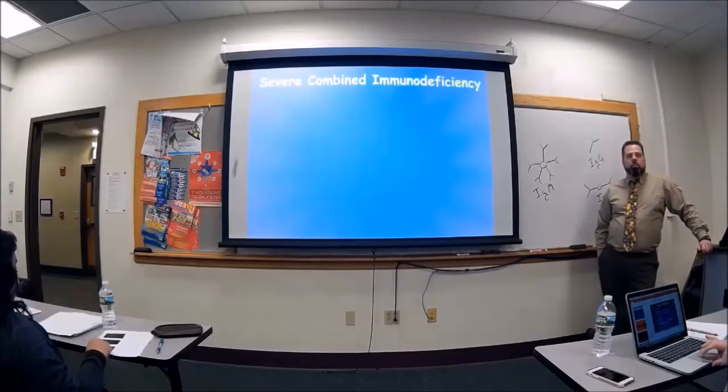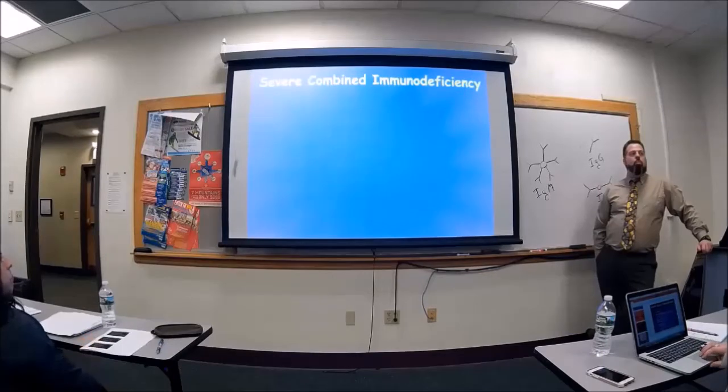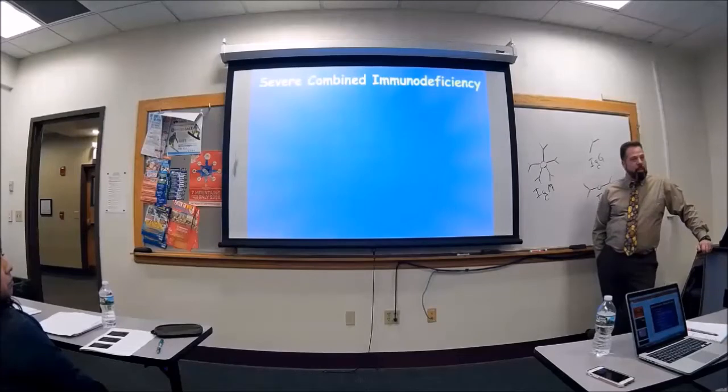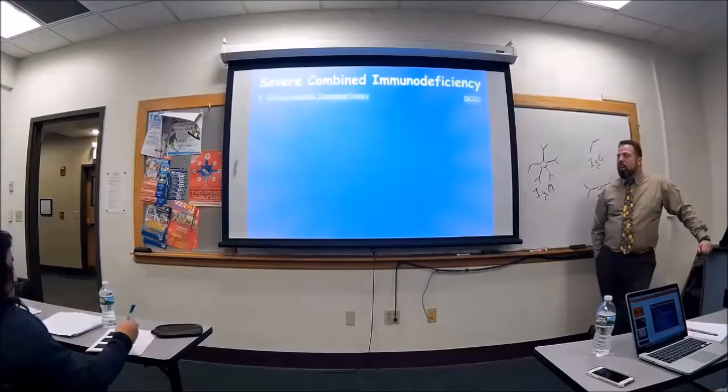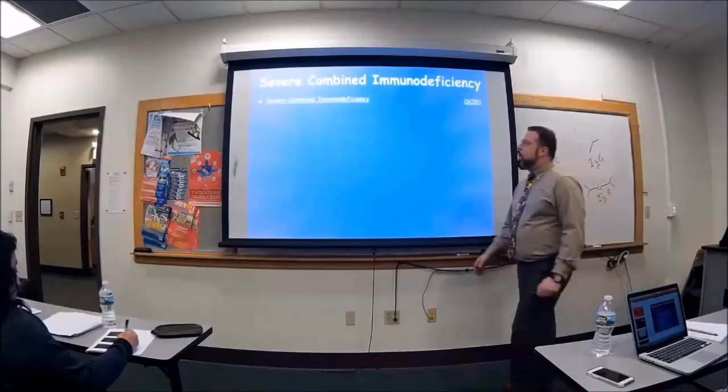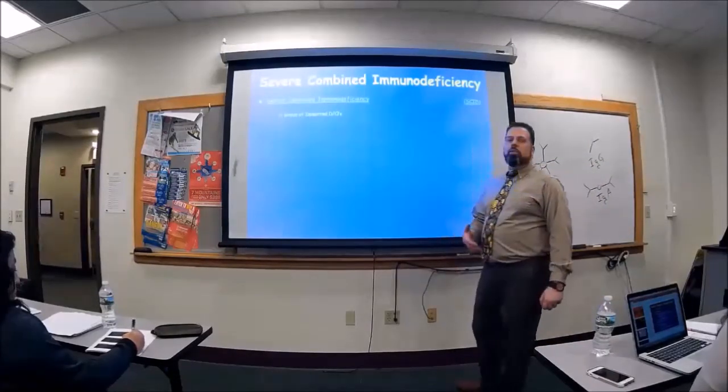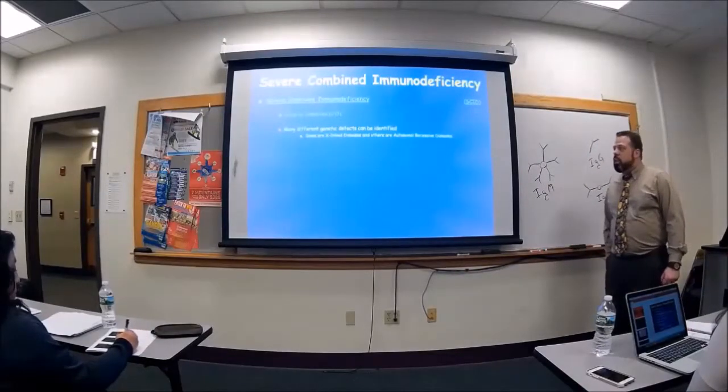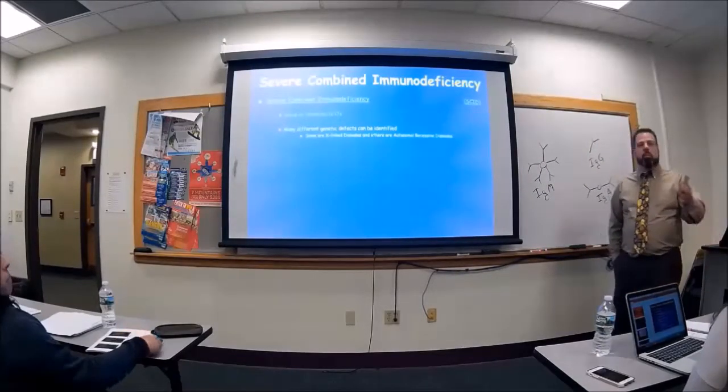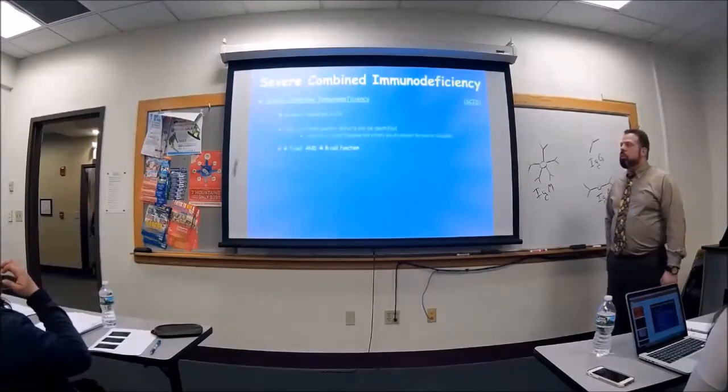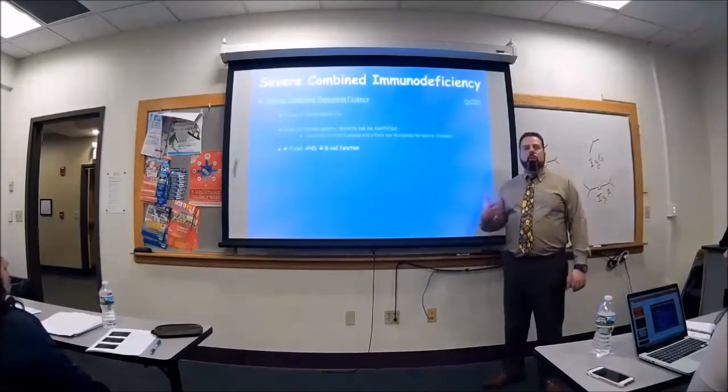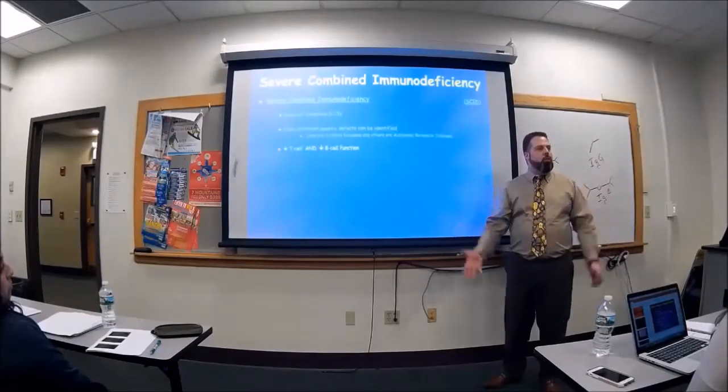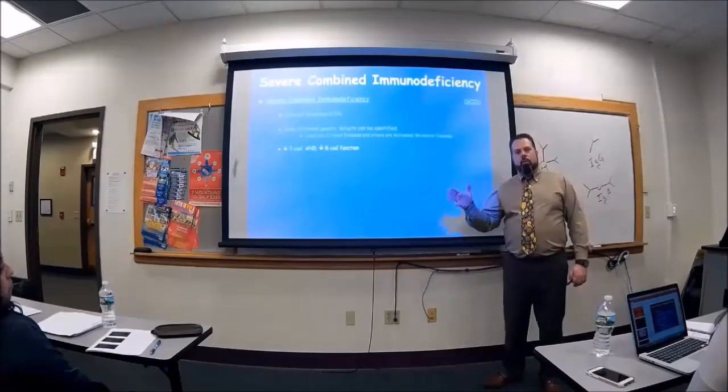Severe combined immunodeficiency. This is where both B cells and T cells are affected. Your whole immune system is pretty bad. This is the bubble boy. Okay. This is SCID. Severe combined immunodeficiency. It's a group of inherited disorders. And, like I said, many different genetic defects can be identified here. Some are X-linked. Some are autosomal recessive. But, in all the cases, all the T cells and B cells, there's something wrong with their function. Either they're both not being made, or they're made, but they're just not functioning.